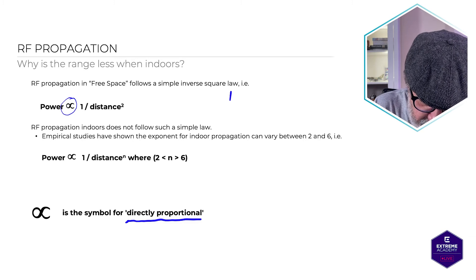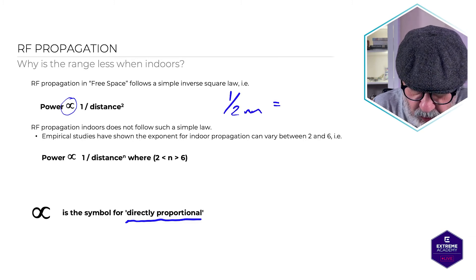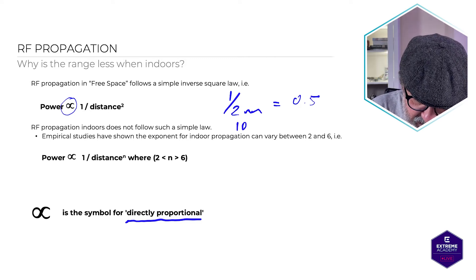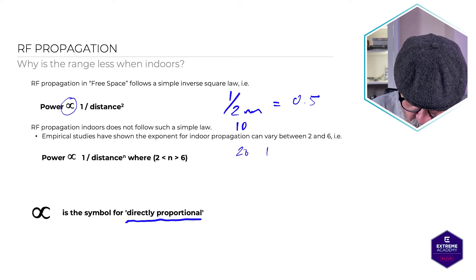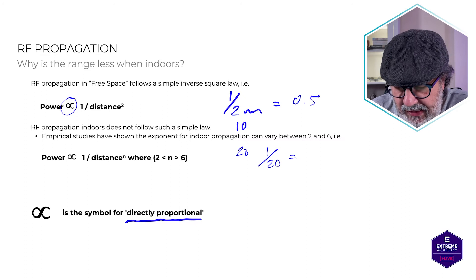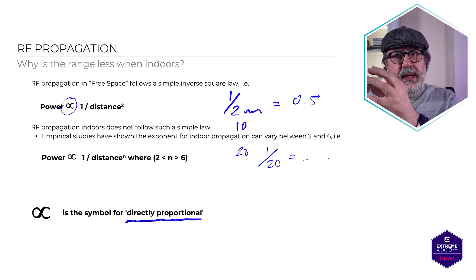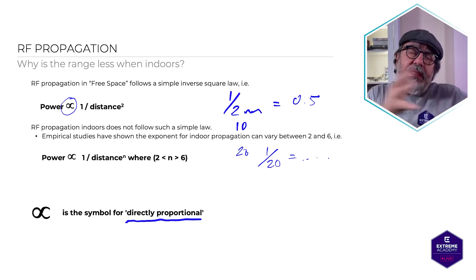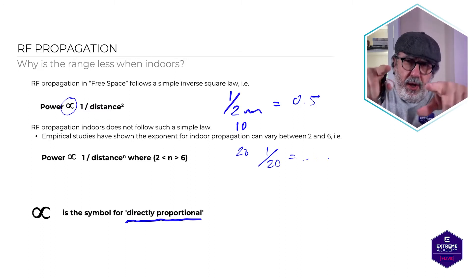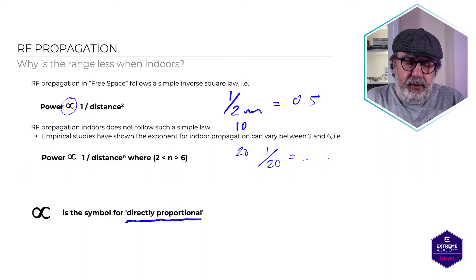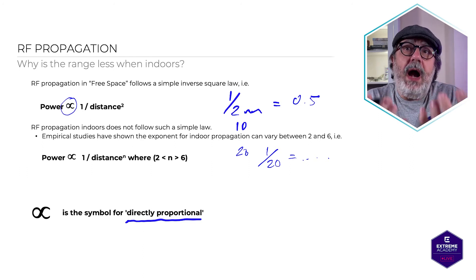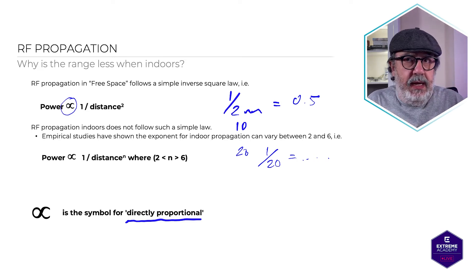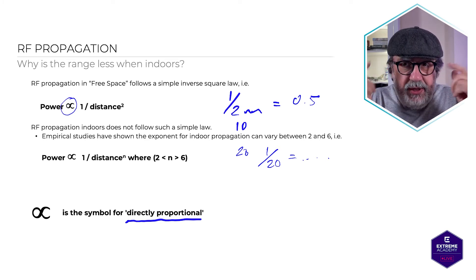So if the distance is 2 meters, one divided by two gives us a half. But if the distance is 10 or 20 meters, one divided by 20 gives a much smaller value. You can use this calculation to start figuring out, when building a scalable and robust wireless network, where your clients are — whether it's a warehouse, a football stadium, or an office.